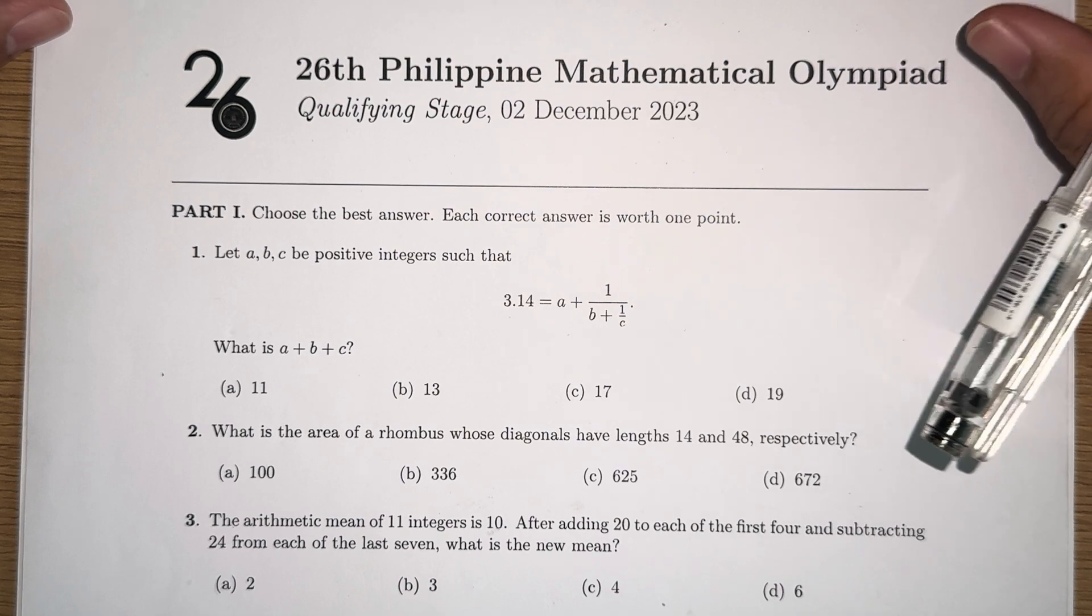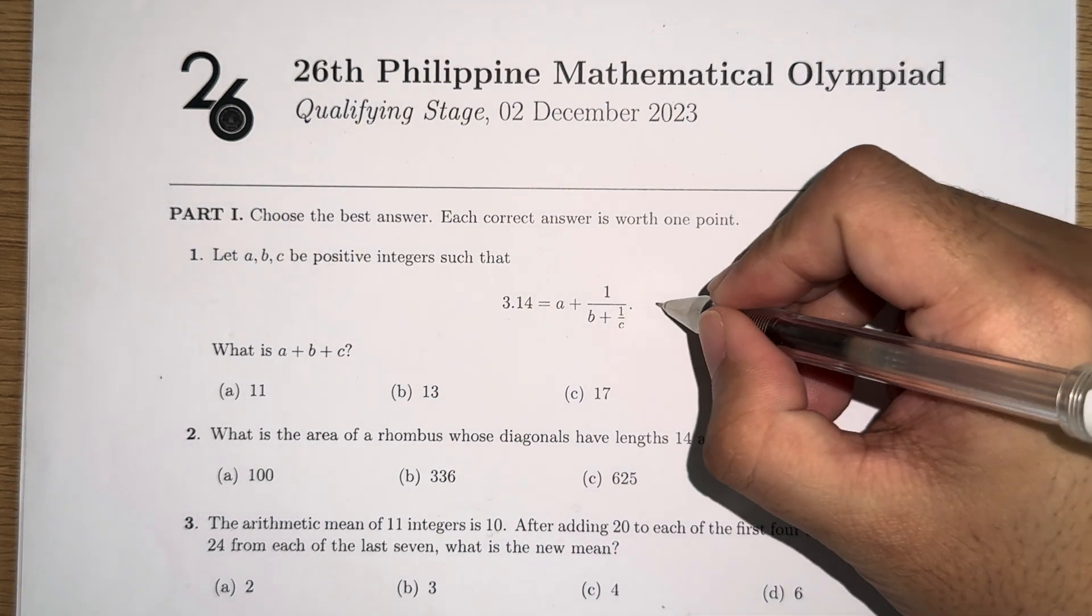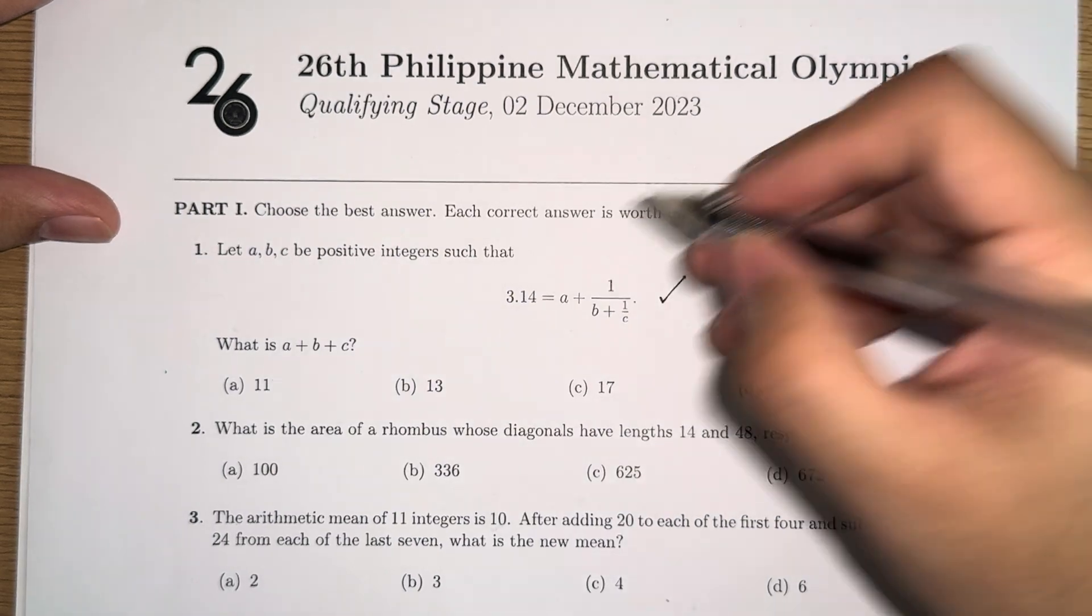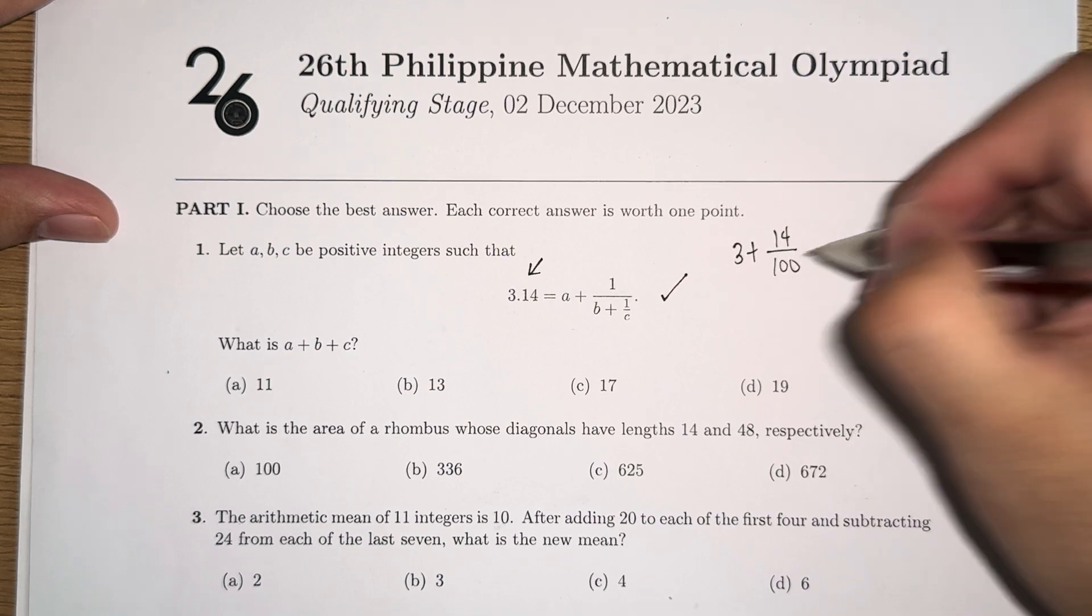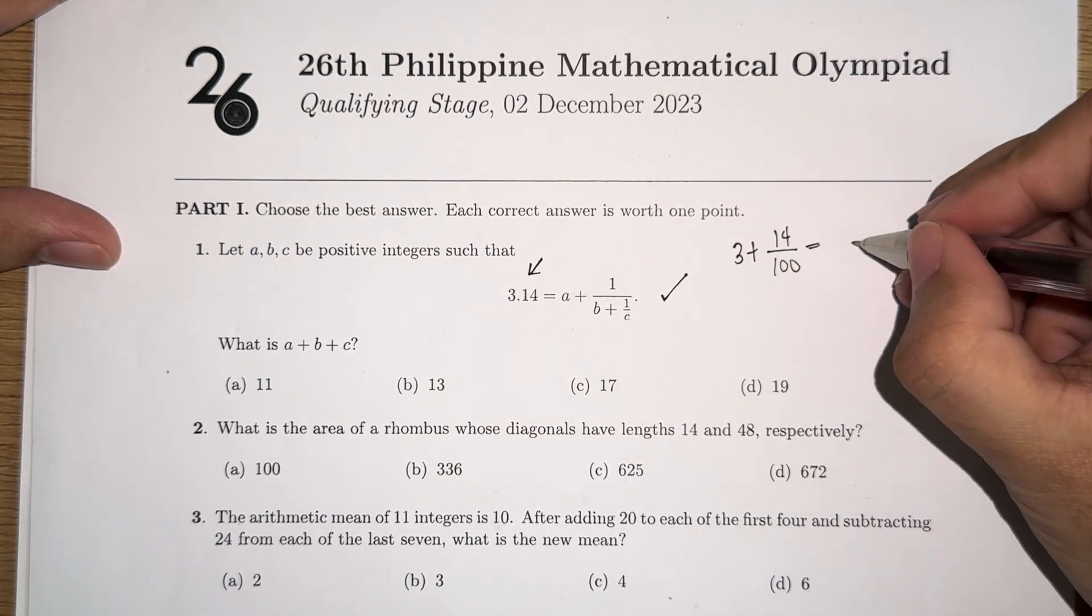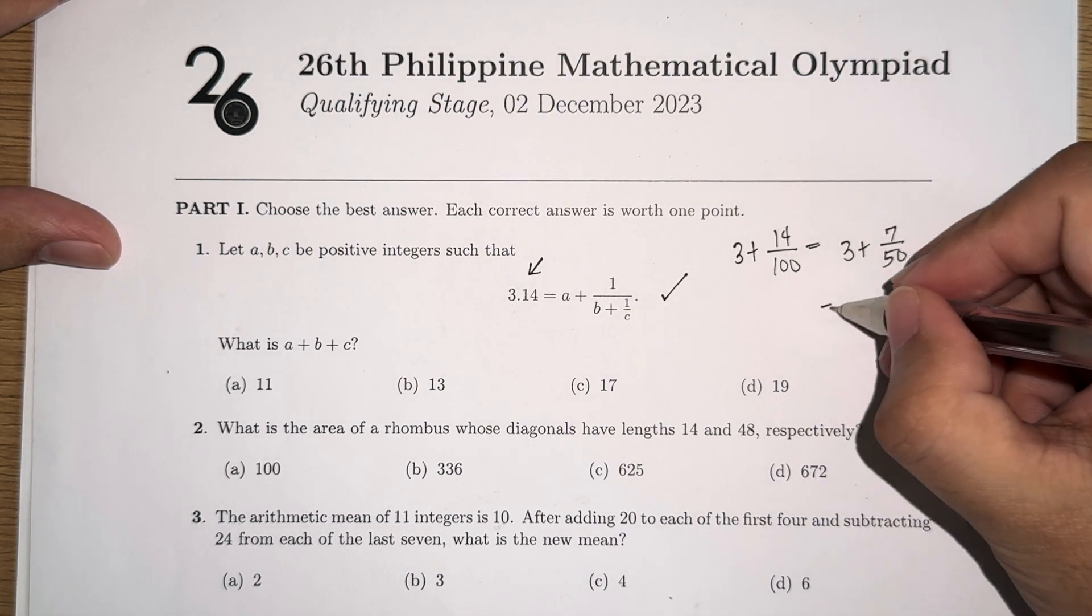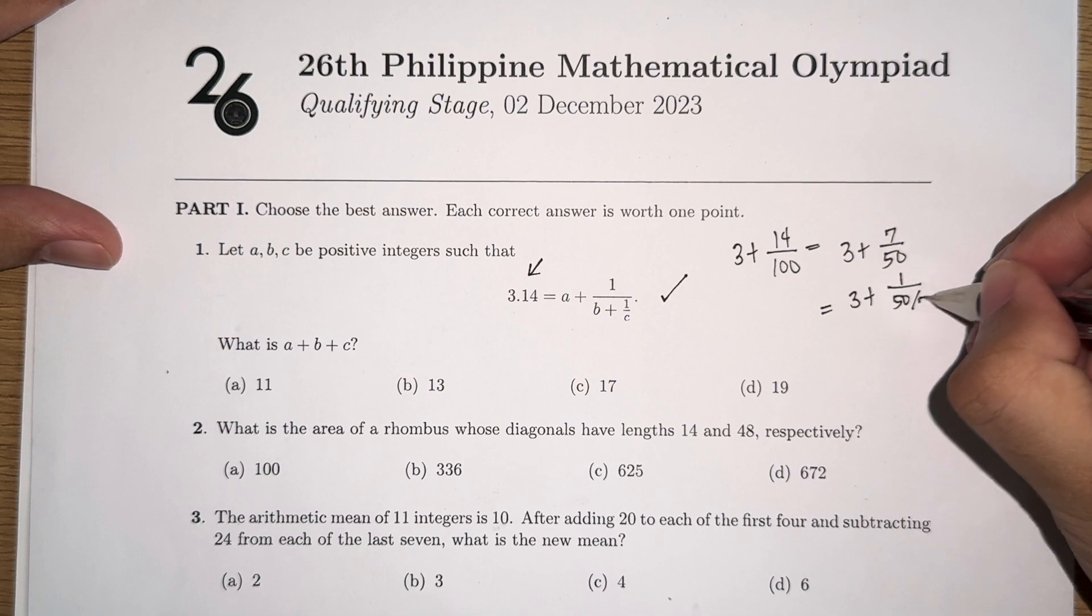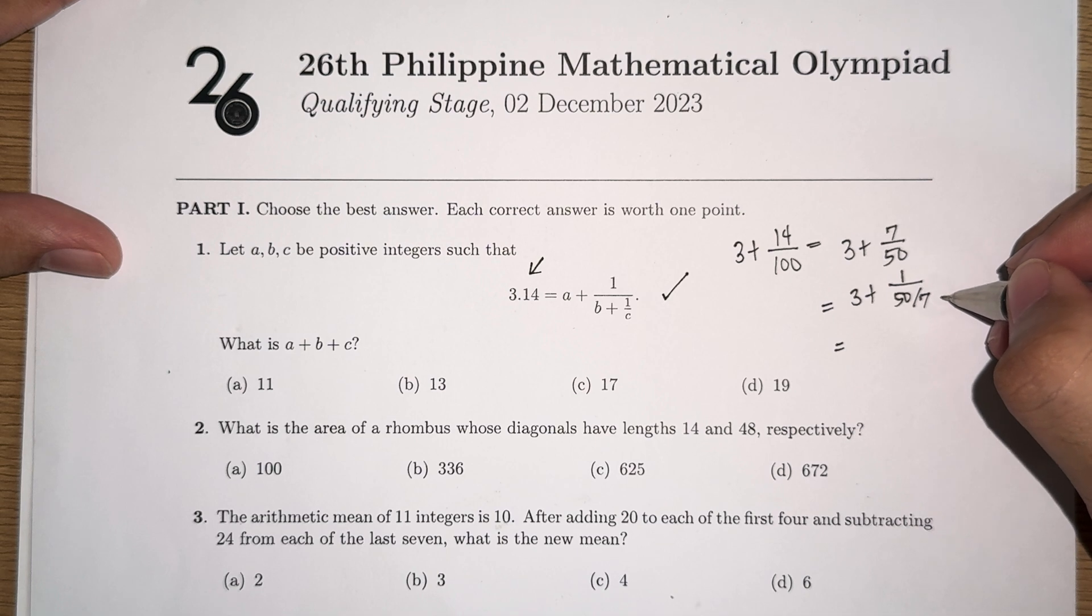So let's answer the first problem here. We are given that a, b, and c are positive integers satisfying this equation. For these types of problems, generally what we do is we rewrite the given rational expression as 3 plus the rational part, so it's 14 over 100, which is also equivalent to 3 plus 7 over 50. And then we find the reciprocal of that fraction we have, so it's 1 over 50 over 7.